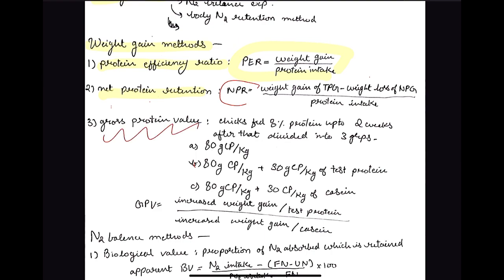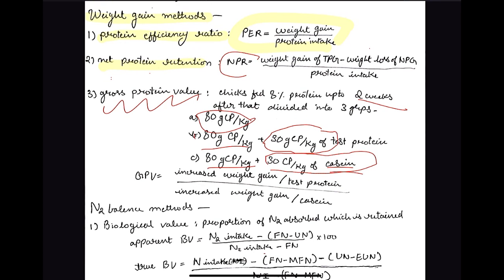Then we have Gross Protein Value (GPV), which is used in chicks. Chicks are fed an 8% protein diet for up to two weeks, then divided into three groups: the first gets the standard diet, the second gets the standard diet plus 30 grams of crude protein per kg from the test protein, and the third gets the standard diet plus the same amount of protein but from casein. GPV equals increased weight gain per gram of test protein divided by increased weight gain per gram of casein.